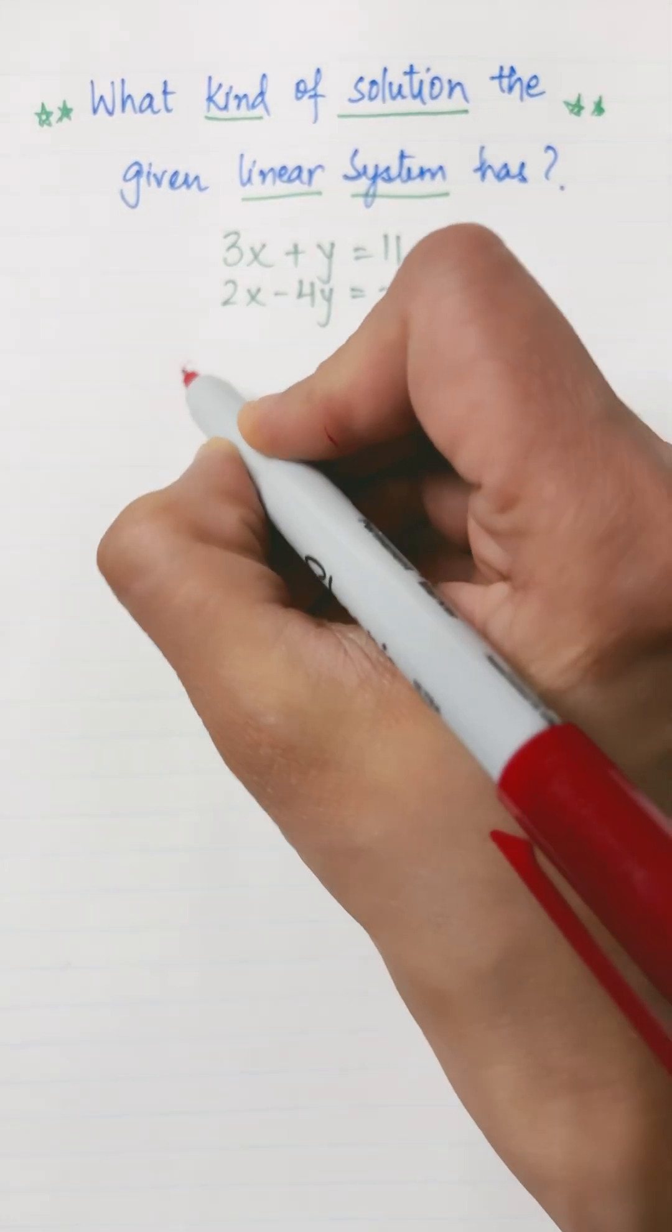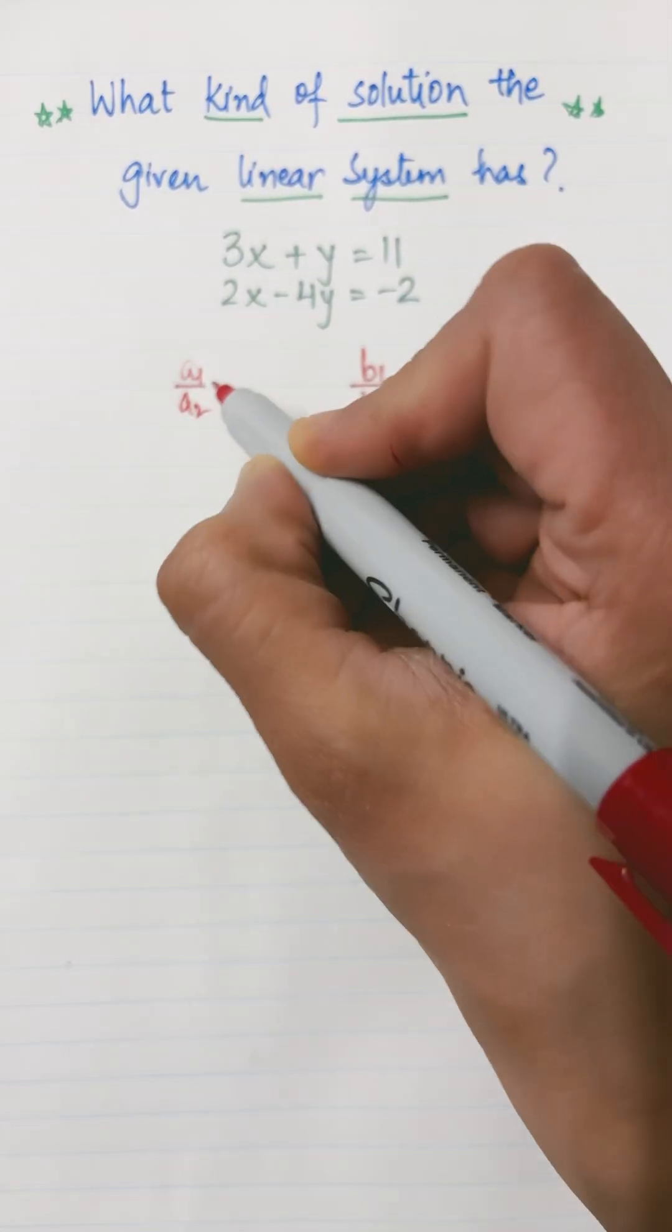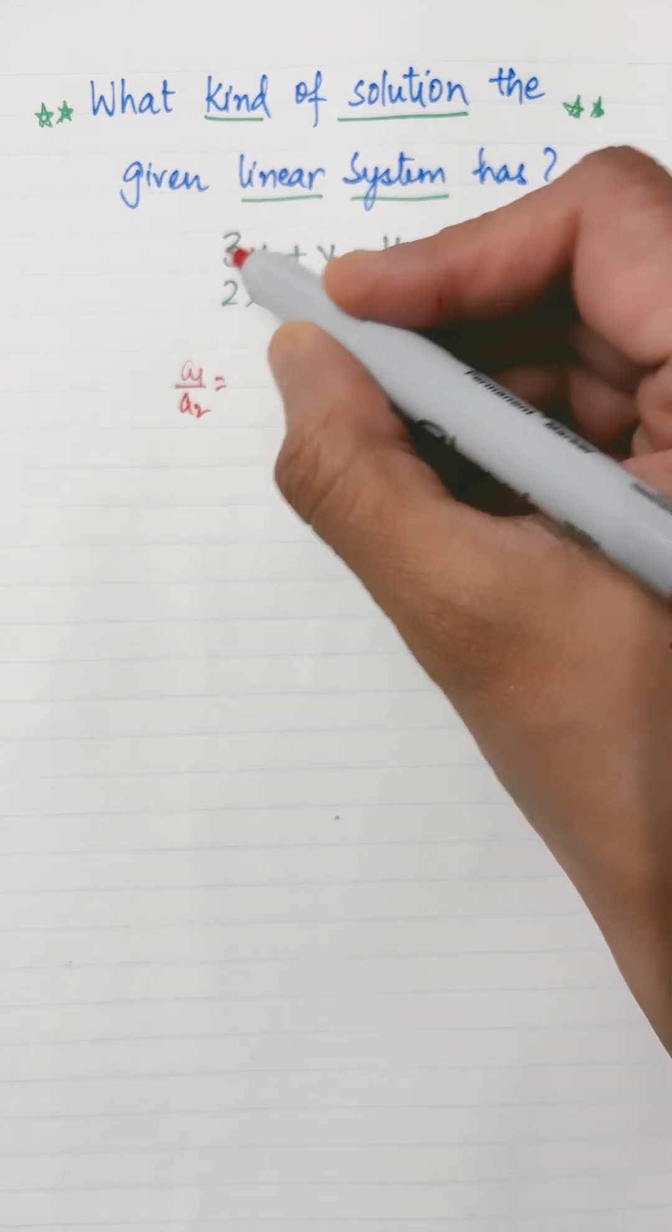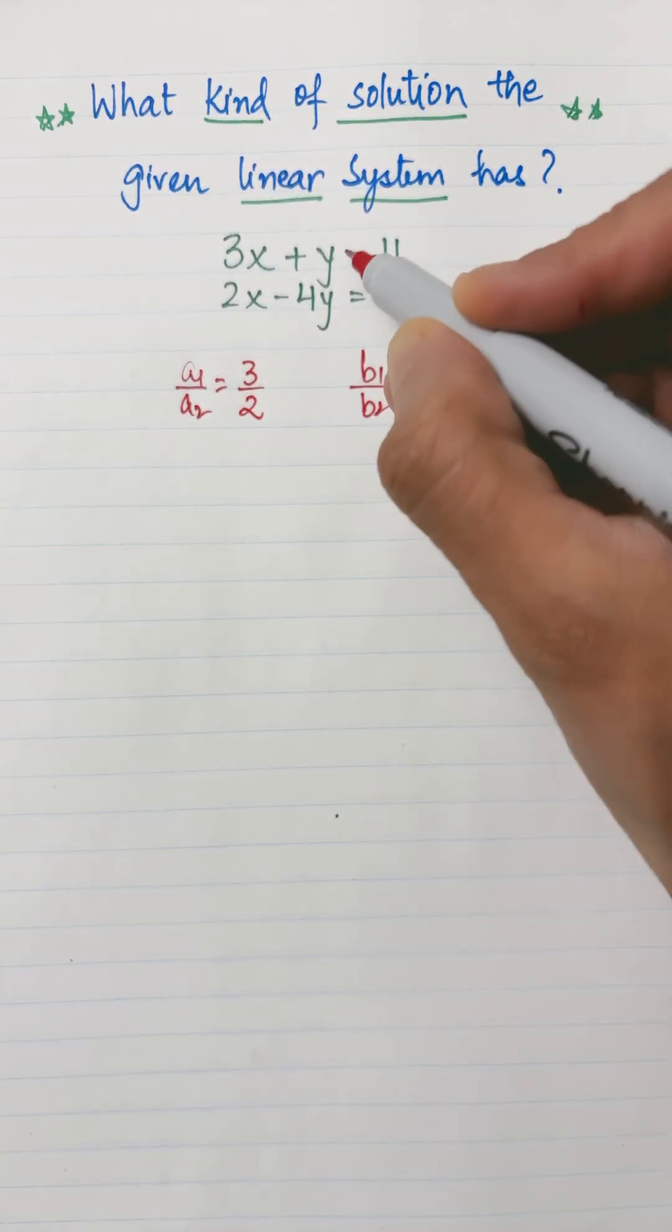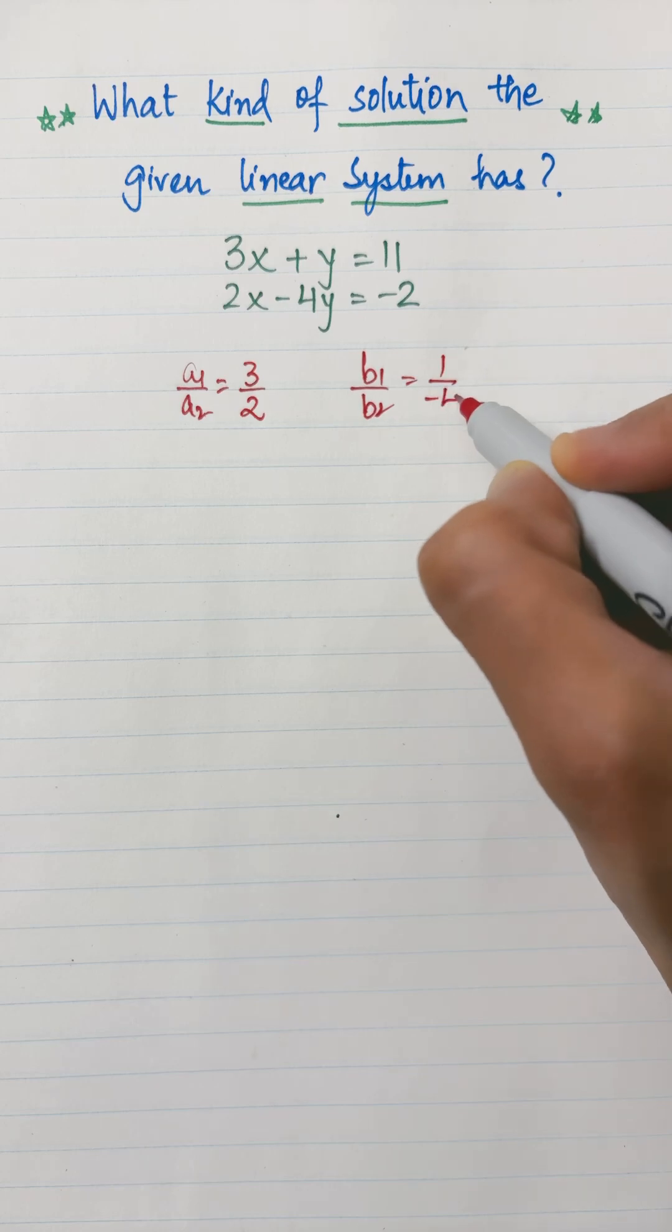So let's compare the ratios a1 over a2 and b1 over b2. A1 over a2 is the ratio of the coefficients of x, and that's 3 over 2. b1 over b2 is the ratio of the coefficients of y, and that's 1 over minus 4.